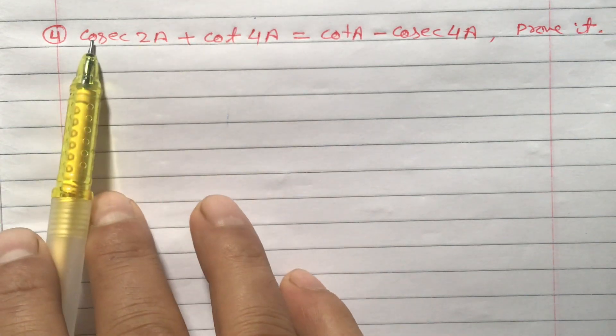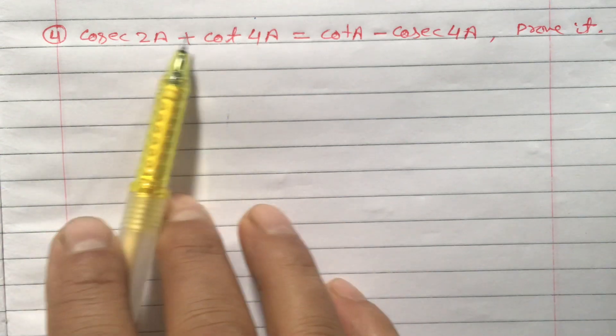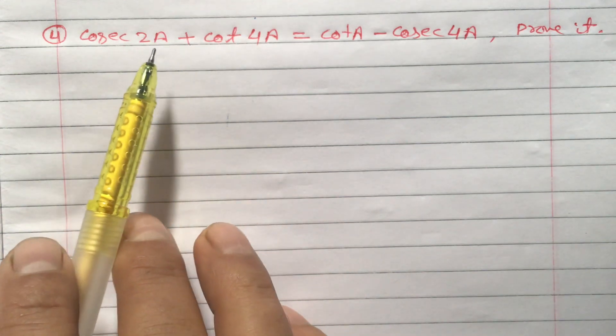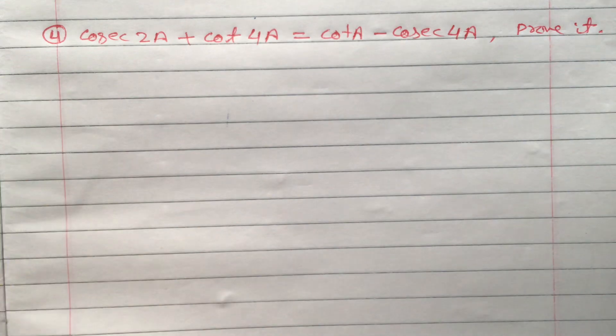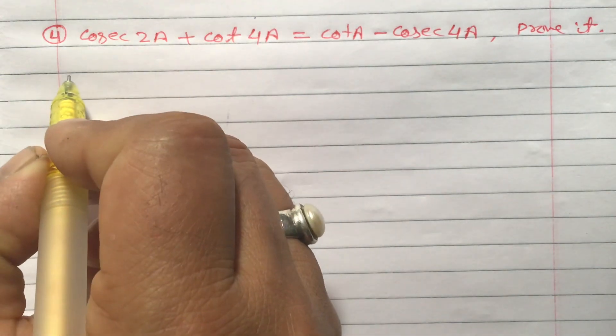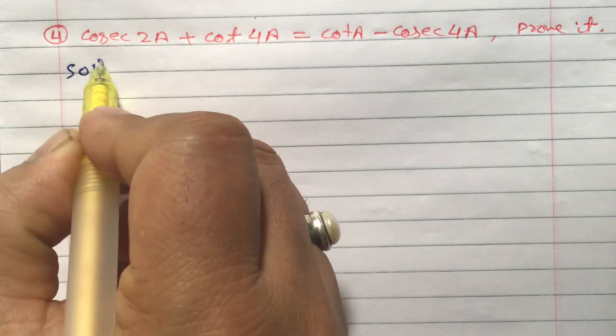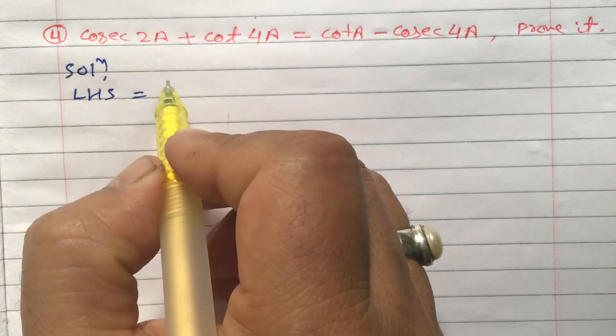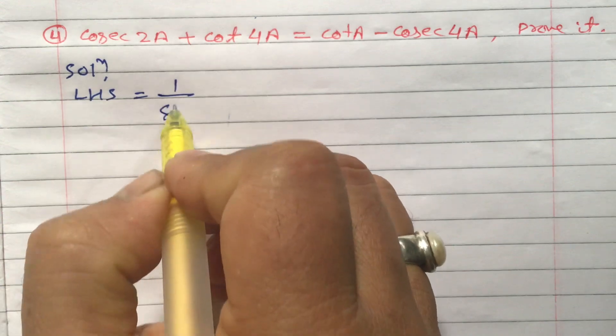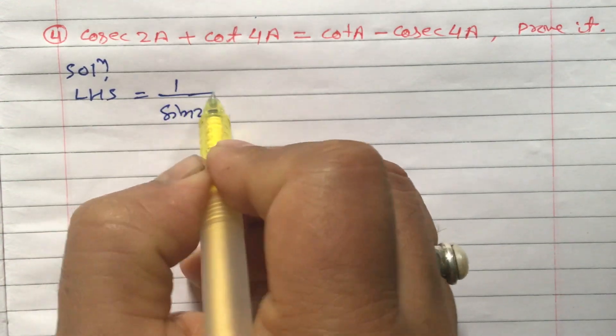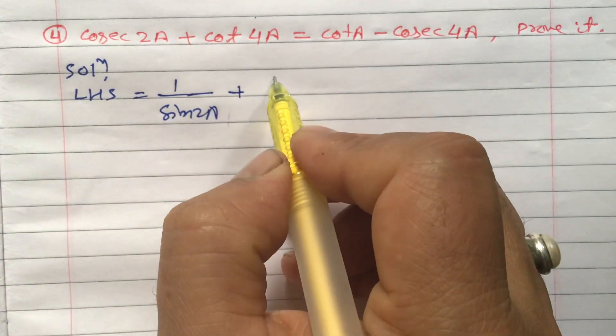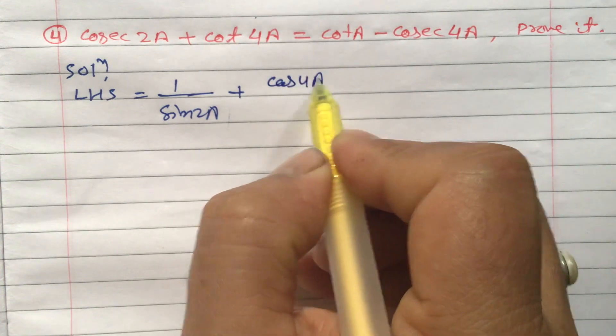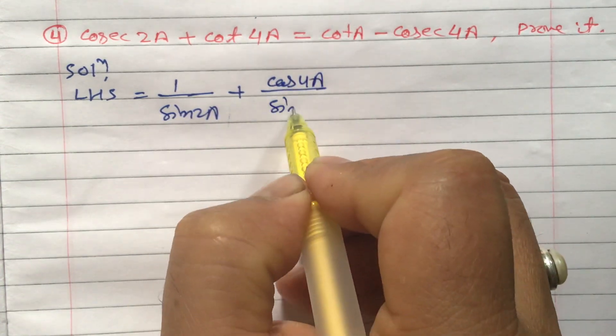So we will start from LHS. If you do this question, the other type of questions like this you can solve easily. So here solution LHS equals to, we can change into sine and cos first of all: 1 by sine 2a plus cot 4a is cos 4a divided by sine 4a.